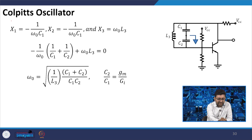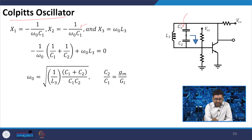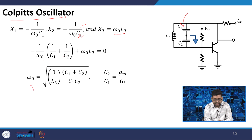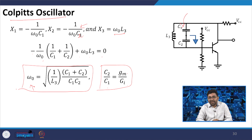We can design a Colpitt oscillator by setting X1 = −1/(omega_naught × C1), X2 = −1/(omega_naught × C2), and X3 = omega_naught × L3. Writing −(1/C1 + 1/C2)/omega_naught + omega_naught × L3 = 0 gives the oscillation frequency omega_naught. The required condition is C2/C1 = G_m/G_i. This is the widely known Colpitt oscillator using a BJT.